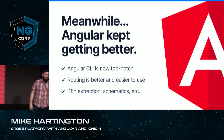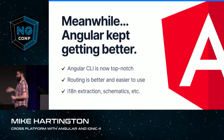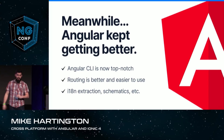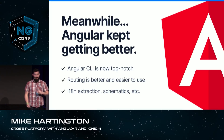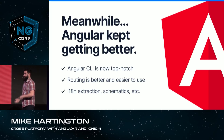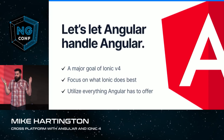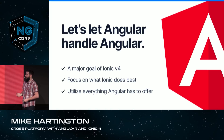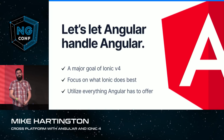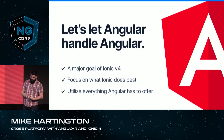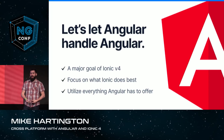Angular kept getting better. As a platform, it really is probably one of the best places to be building apps. The Angular CLI is top notch. The router is getting even better with things like dynamic imports. And then all the other features of Angular really just make it a one-of-a-kind place to build apps. So with our 4.0, we set out with a simple goal: let Angular handle Angular. We wanted to go back to just focusing on the components, which is really what we do best, and reuse all the pieces of Angular while still providing our strong opinions.